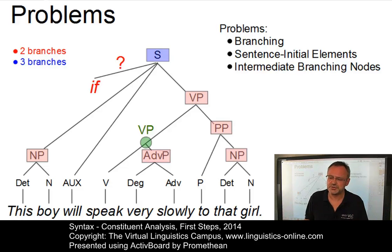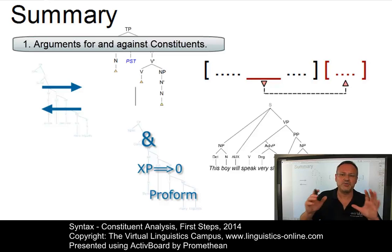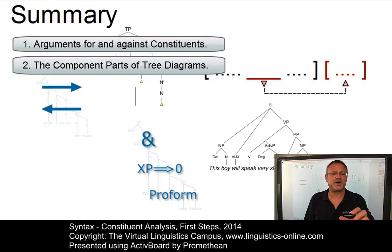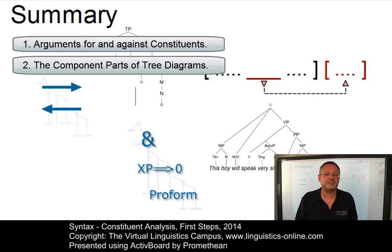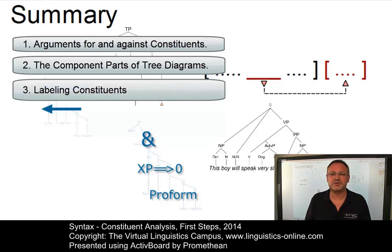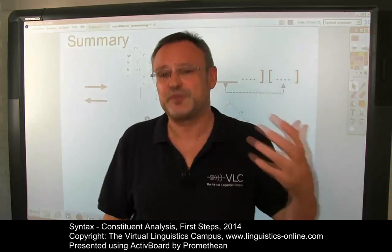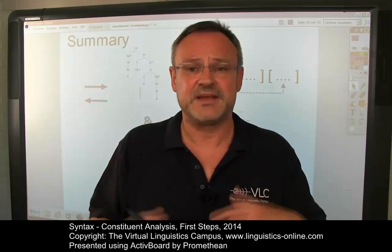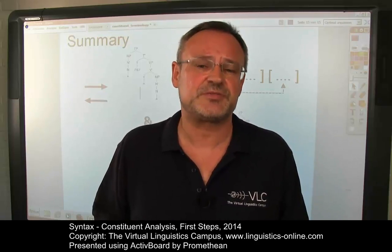For the moment, it suffices if you have understood the following — my summary for this e-lecture. It should be clear how you can argue for or against particular strings of words as constituents. You should know how to address the various parts of a syntactic tree: nodes, branches, mother nodes, daughters, sisters. And you should have a first idea about labeling constituents — noun phrases, adverb phrases, verb phrases, etc. See you again in a follow-up e-lecture about constituent analysis, where we will deal with the problem of constituent hierarchies and intermediate phrasal categories. Until then, have a nice time. Bye-bye.